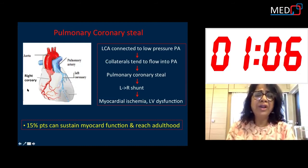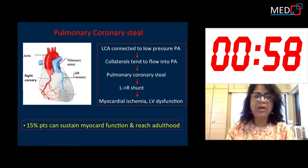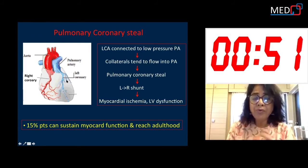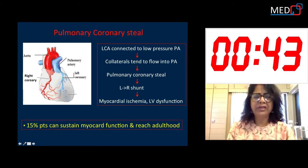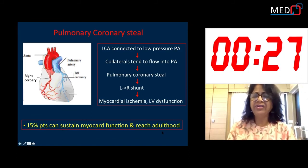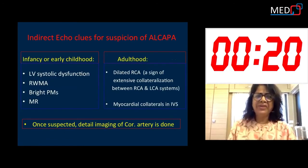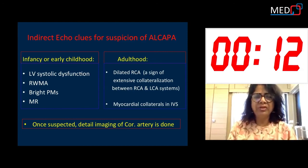This results in pulmonary coronary steal with a left-to-right shunt. The volume of shunt is small relative to cardiac output but quite large in terms of coronary flow reserve. As a result, there is myocardial ischemia, LV dysfunction, and even sudden cardiac death. Despite these insults, 15% of patients can sustain myocardial function at rest and with exercise and reach adulthood. The diagnosis of ALCAPA is very difficult, especially when the patient presents in adulthood.